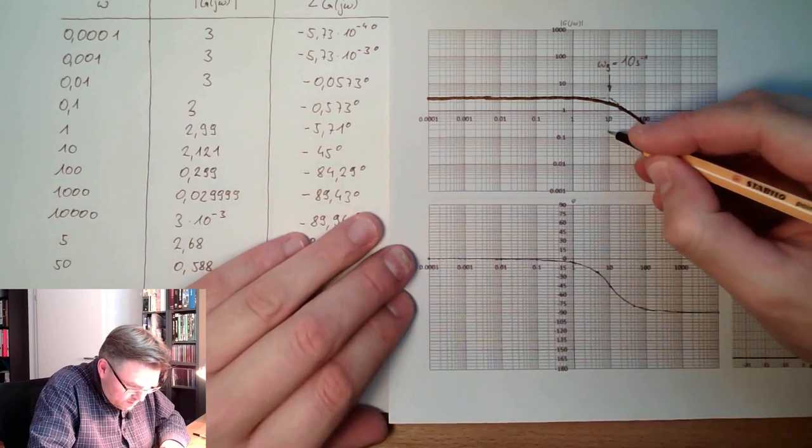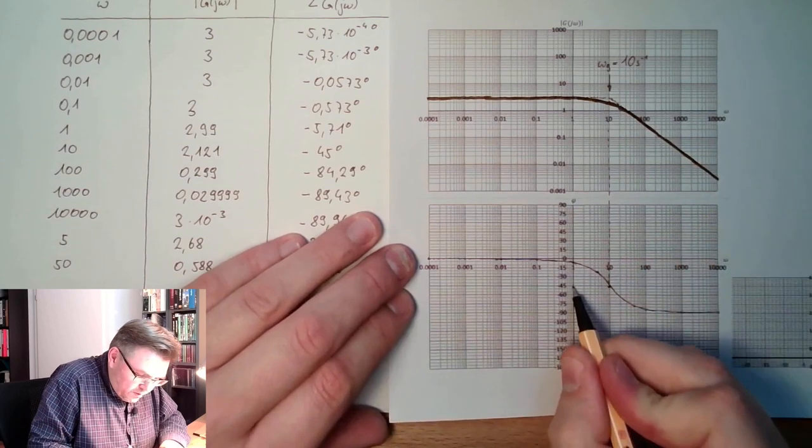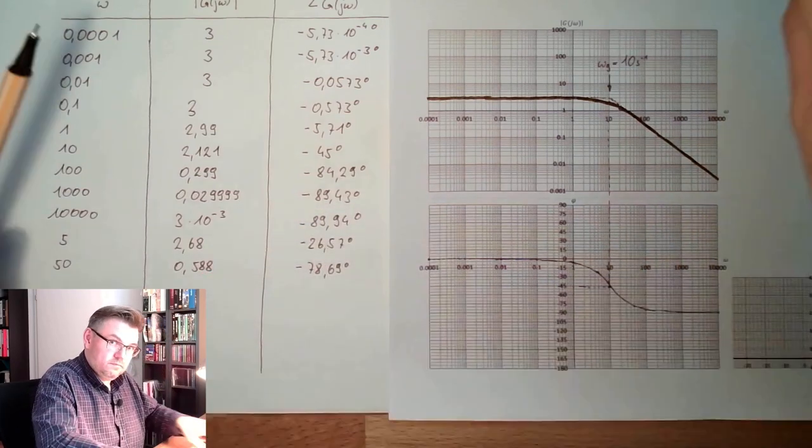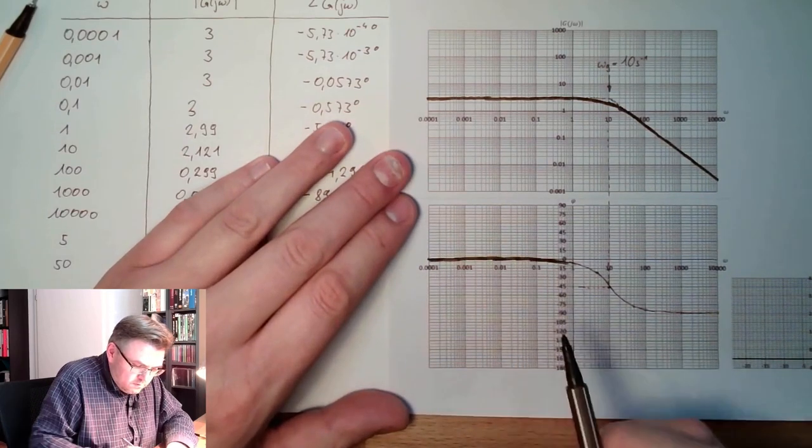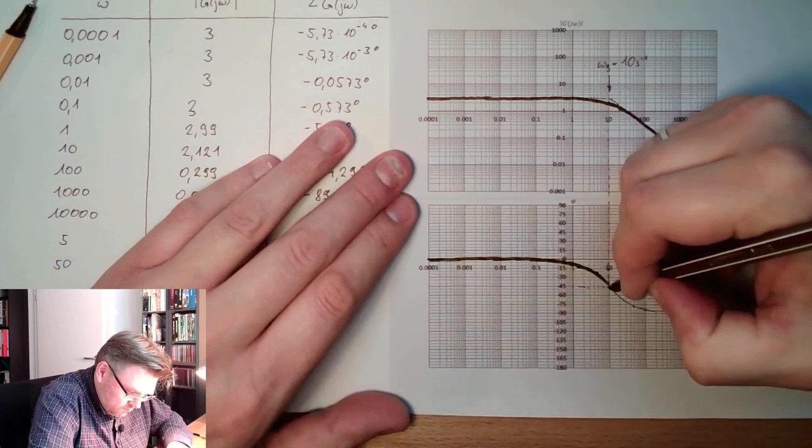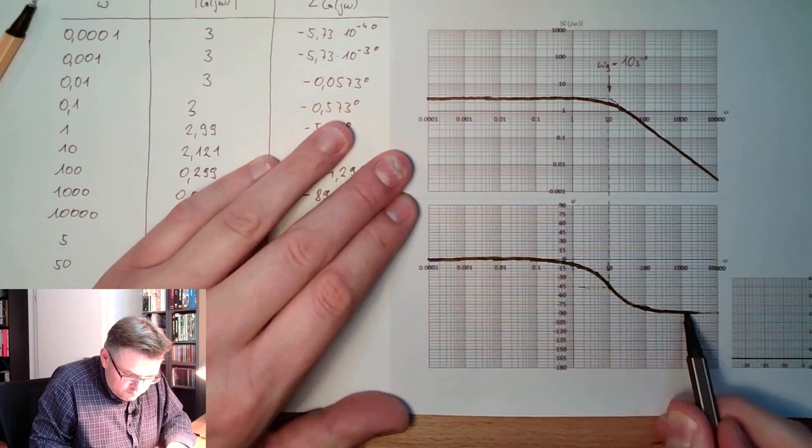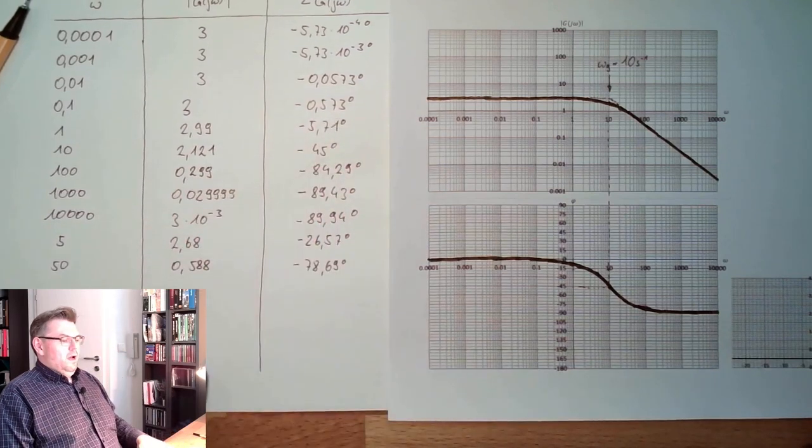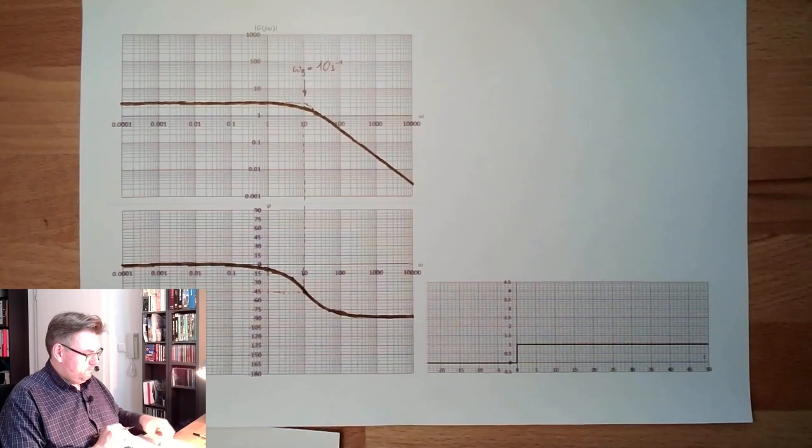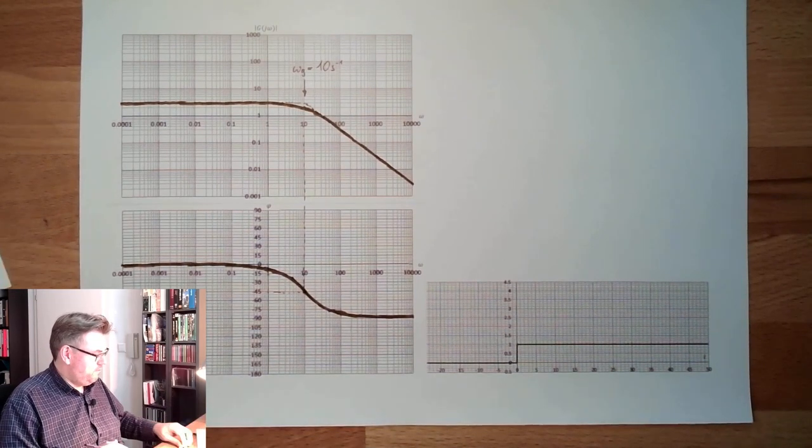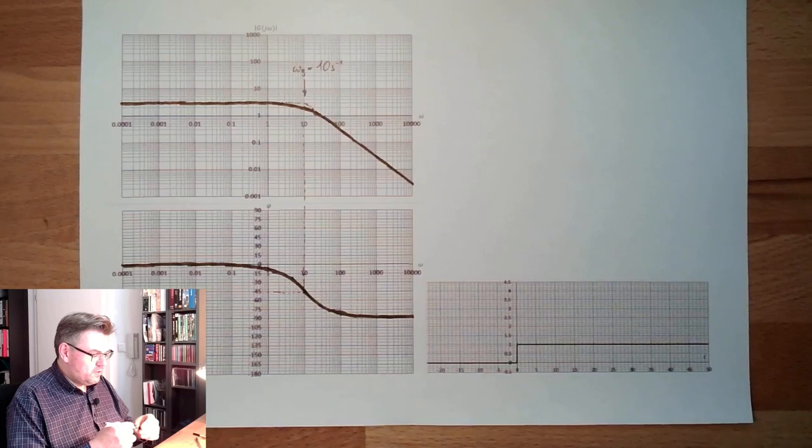And here, like we've learned in measurement, we have exactly this minus 45 degrees. This is coming out of the math here. Beautiful. So you see, we can produce the Bode plot simply by changing this s to j omega.